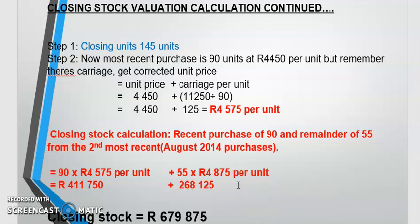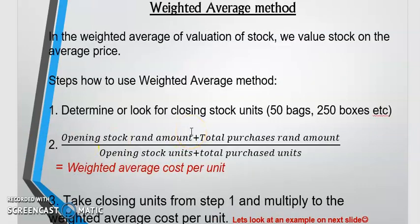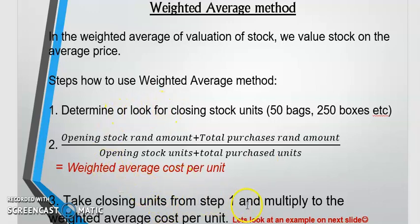It's easy if there's no carriage. But if there is carriage, you must get the unit price of the carriage and add it to the original unit price — like we did here: carriage unit price of 125 added to the original unit price, then multiply by the units. The weighted average method is also easy. Step one is the same: get your closing units. Step two: value stock on average price. You take your opening stock rand amount plus total purchases rand amount and divide by opening stock units plus total purchase units to get average cost per unit.